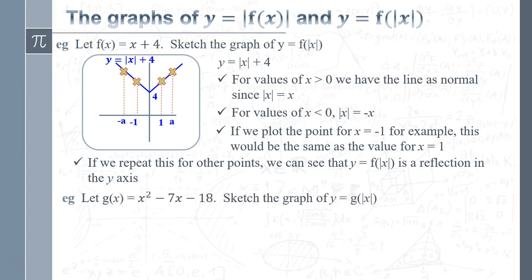Let's have a look at that again, with our other function. So we've got g of x equals x squared minus seven x minus 18. So let's do y equals g of the mod of x. So what I'm going to do is take modulus x and put it in place of x here each time.